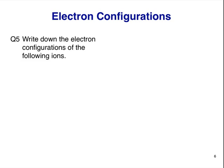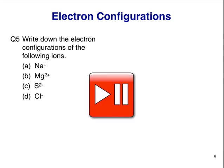Question 5. Write down the electron configurations of the following ions: Na+, Mg2+, S2-, Cl-. Pause the video here and work out your answers.